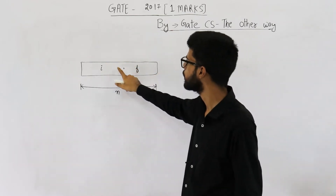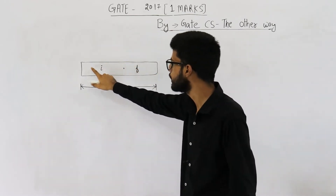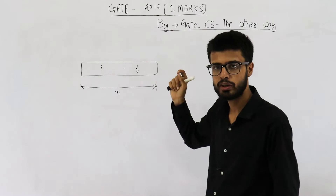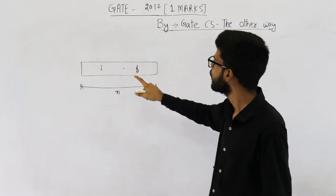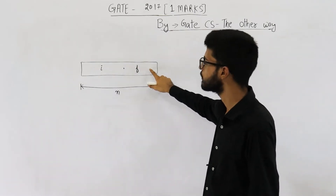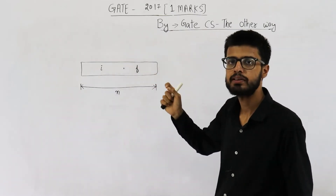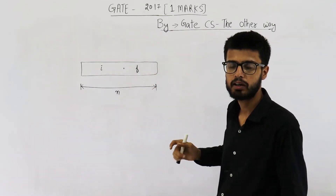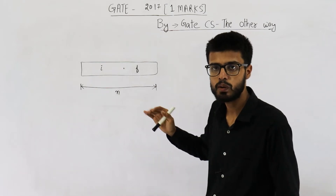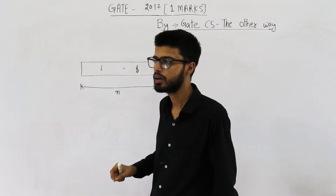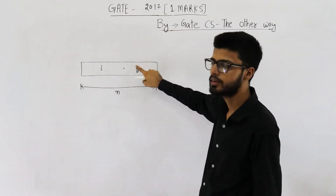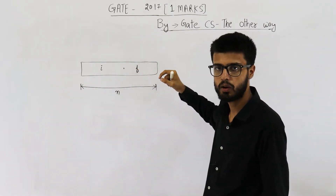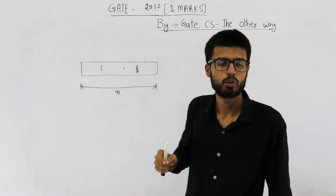For example, here you can use only i bits to represent the integer part and only f bits to represent the fractional part. Even if you don't have any fractional part, you will still occupy those bits — they will all be zero.